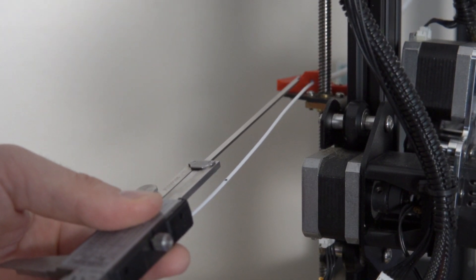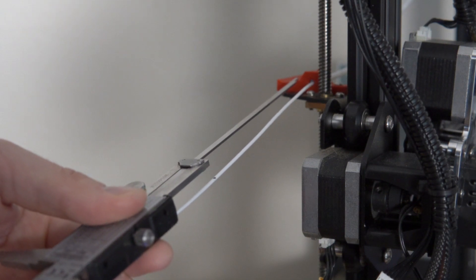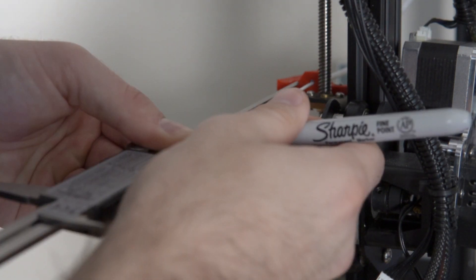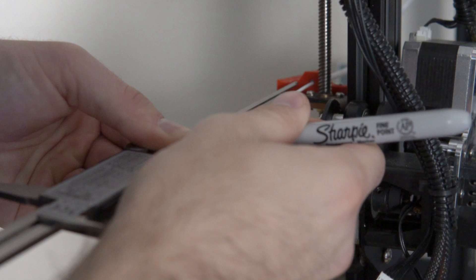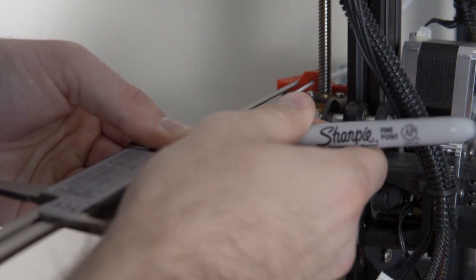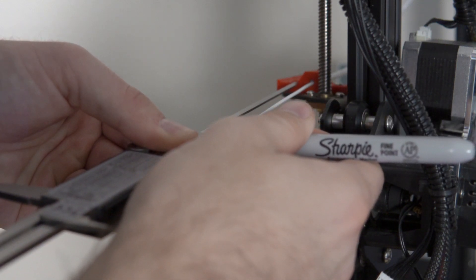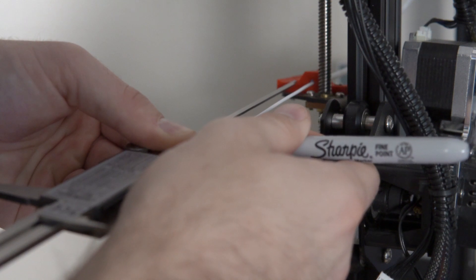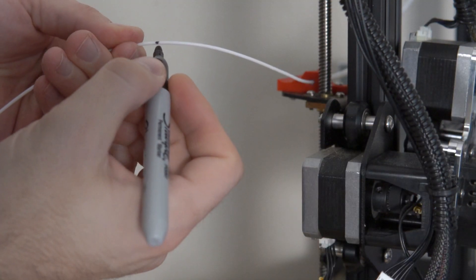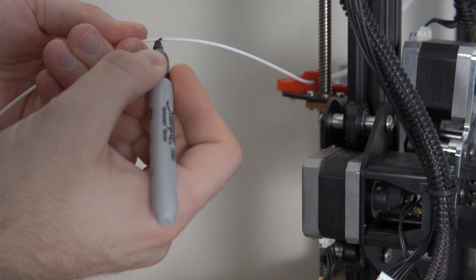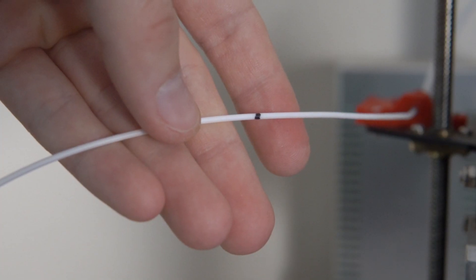The easiest way I found is to take the bottom portion of the digital calipers and place it against where the filament enters your extruder or guide tube, then take a sharpie and mark it at the 120 millimeter point, which should be at the bottom of your calipers. Mark it well enough so you'll be able to see it. This is why I recommend using light-colored filament.